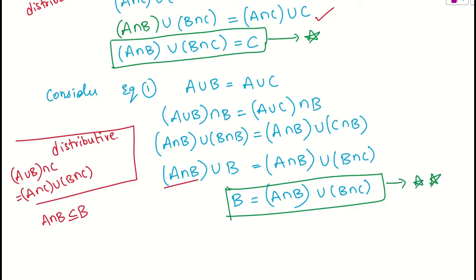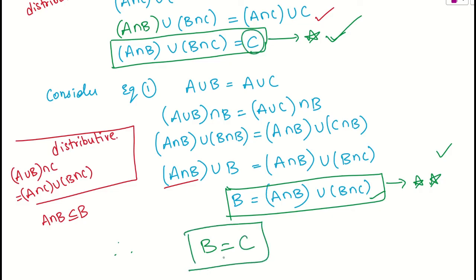If you consider equation star and equation star star, we can say that A intersection B union B intersection C equals C from star, and B equals A intersection B union with B intersection C from star star. Substituting, B is equal to C. From this, I can conclude that B must be equal to C. Thank you.